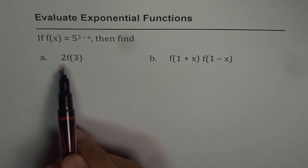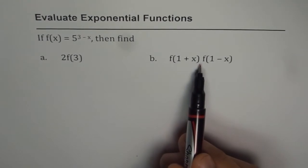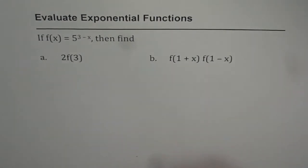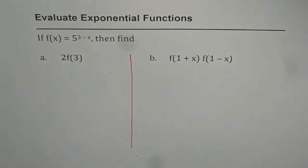Part A is 2 times f(3) and part B is f(1 + x) times f(1 - x). So we will do these two parts one by one. Let us start with part A which is 2 times f(3).